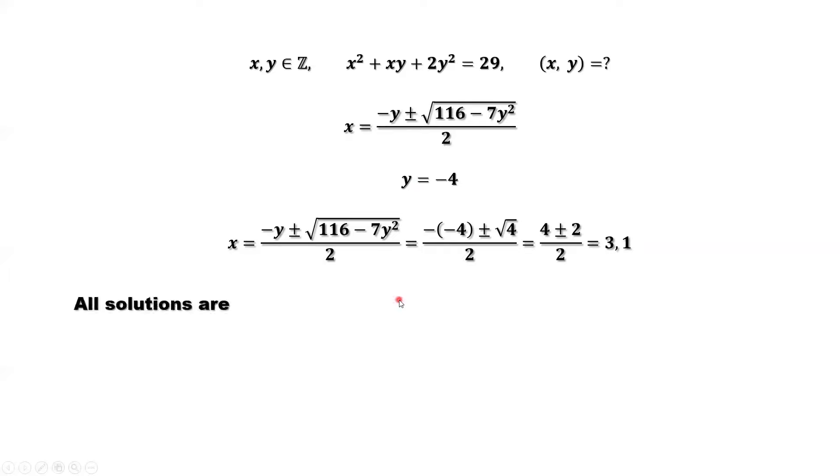In summary, we list all solutions here. Corresponding to y = 4, we have x = -1, -3. Corresponding to y = -4, we have x = 3, x = 1. We have four answers for this equation where x and y both are integers. That's all. Thanks for watching and I'll see you next time.